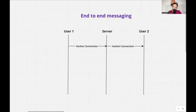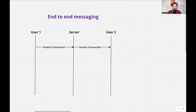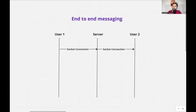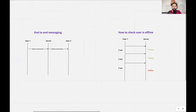If you already know the disadvantage of socket connections, please mention that in the comment section. For end-to-end messaging: user one starts a socket connection with the server, and when user two comes online they also establish a socket connection with the server. Whenever user one wants to send a message to user two, they use that socket connection. No matter how many people user one sends messages to, there is always one socket connection established.